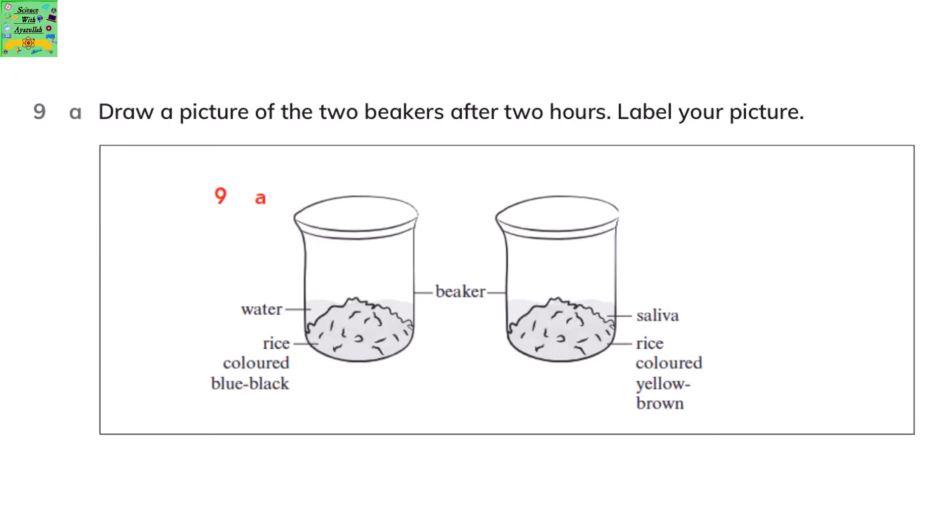Now again draw a picture of two beakers after 2 hours. Label your picture. The first picture has a beaker with water in it and rice which is colored blue-black. In the second beaker there is saliva along with rice which is colored yellow-brown.